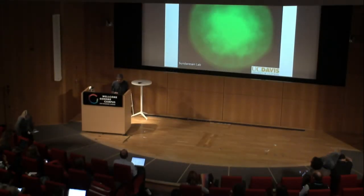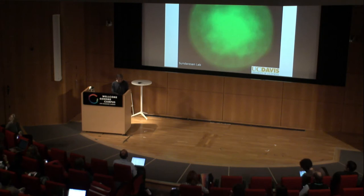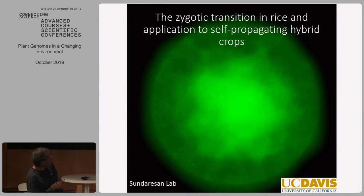I thank the organizers, Joy and Cristobal, Pamela and Michel, for their very kind invitation to this great meeting. My talk will be roughly divided into two parts. One is very basic science, which I'll try to make intelligible to the uninitiated — it's a sort of esoteric area of biology — but in the second half of my talk, I hope to convince you that it is not without its uses, on the applied aspects of our research. It's on the zygotic transition, and specifically we're working on rice, and the second part is the application to self-propagating hybrid crops.